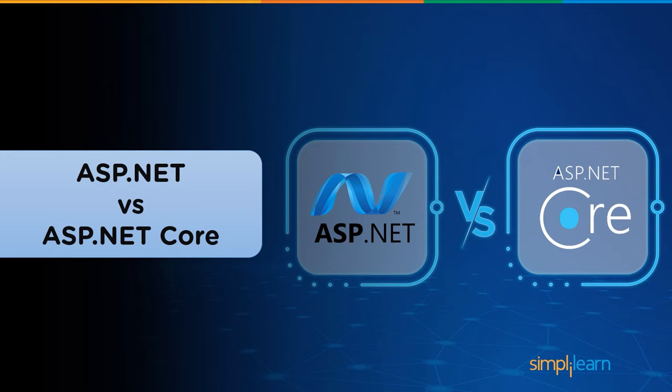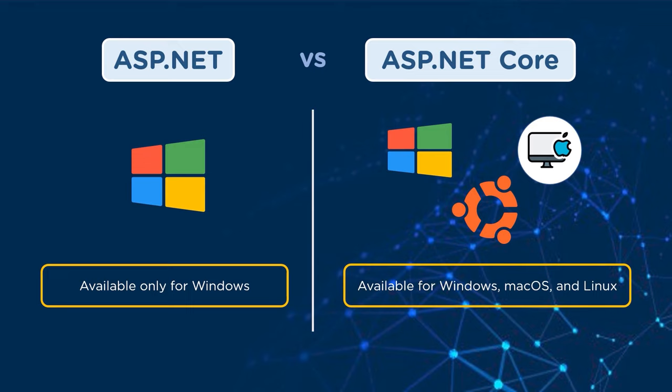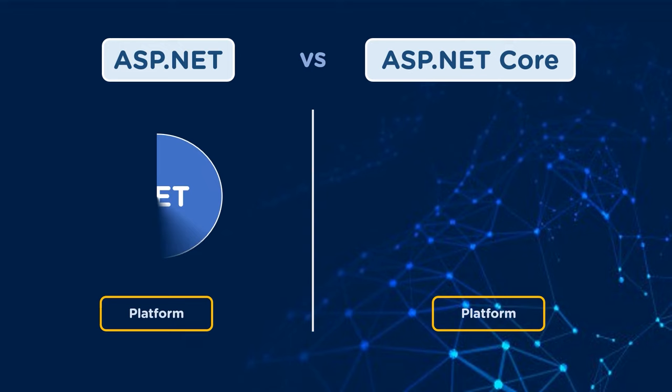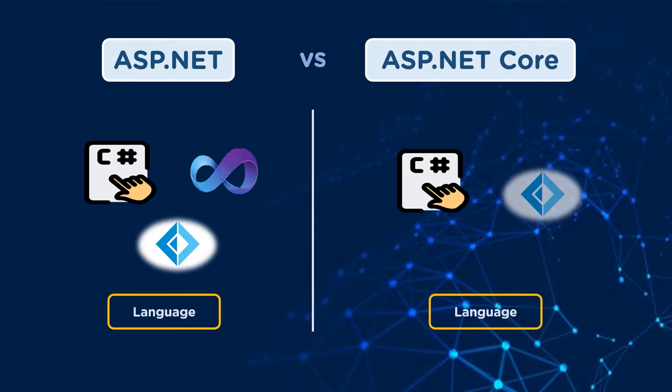Applications built using ASP.NET are applicable only for Windows, but applications using ASP.NET Core are applicable for Windows, Linux, and macOS. ASP.NET uses .NET technology as the platform for building applications, whereas ASP.NET Core uses both .NET and .NET Core as the platform for building applications.